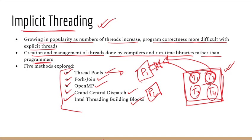Implicit threading gives application developers a significant advantage — they don't need to worry about threading at all. Instead of thinking about how to create or manage threads, developers just focus on their program and tasks. The question of how to divide a task into threads and how to design that division is handled entirely by implicit threading — thread execution and management are taken care of automatically.